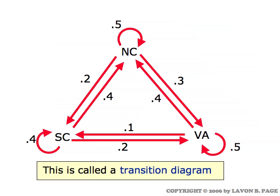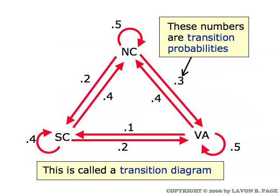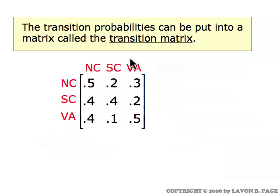What we have here is called a transition diagram. It shows the flow of vehicles from one state to the others. The numbers that appear in the diagram are called transition probabilities. For example, this .4 is the transition probability going from Virginia to North Carolina, and it represents the probability that a truck rented in Virginia will be dropped off in North Carolina. You can also locate these numbers in a matrix, and the matrix version is what we'll be working with primarily in this part of the course.